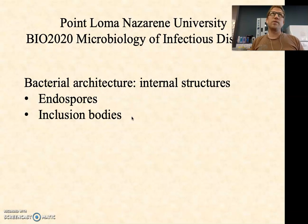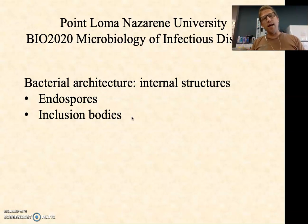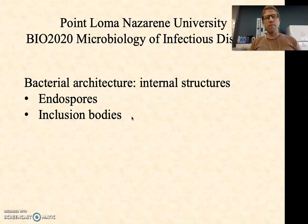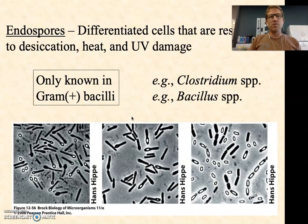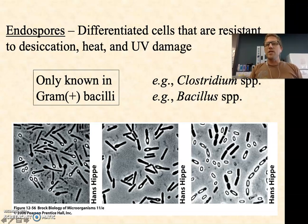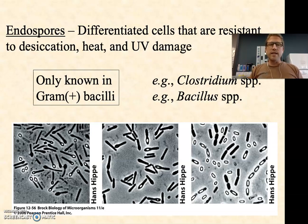Just like when we talked about some of the external structures like flagella and fimbria, it's not universal — not everybody has these. The same is true here: not all bacteria can form endospores. And not all can form what we call inclusion bodies. So let's start with endospores — sometimes we just call these bacterial spores. These are really differentiated cells, so calling them an internal structure really isn't accurate.